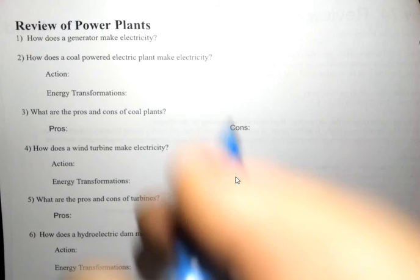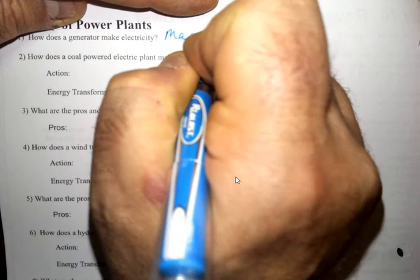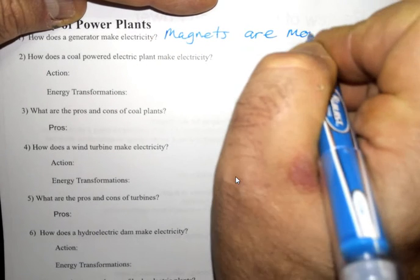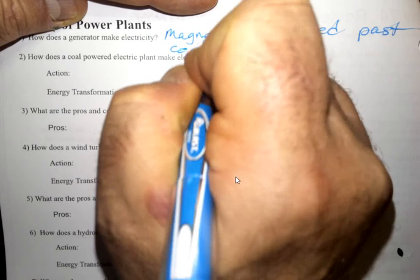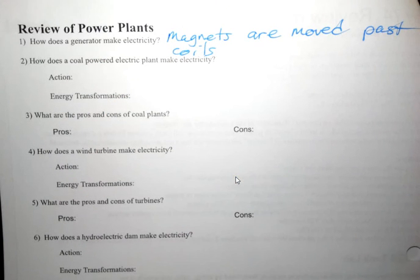Electricity. The basic idea is that magnets are moved past coils so the moving magnetic field pushes on the electrons in the coils, making the electrons move and therefore creating a current.